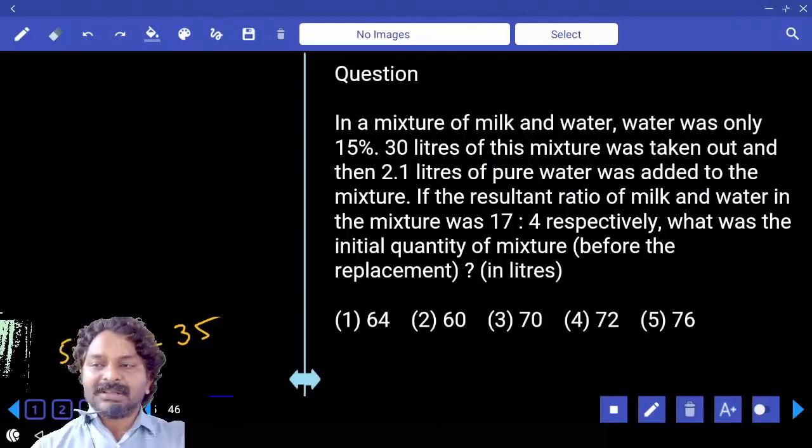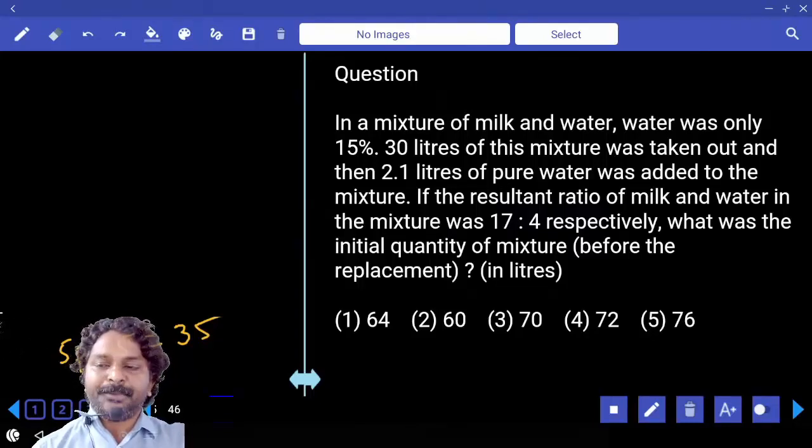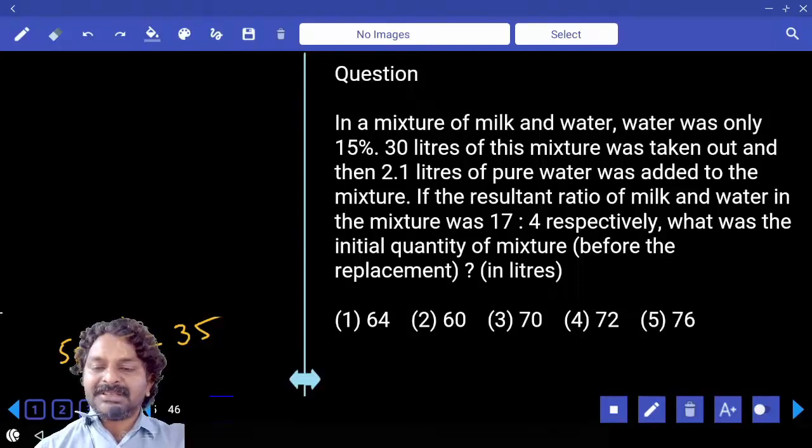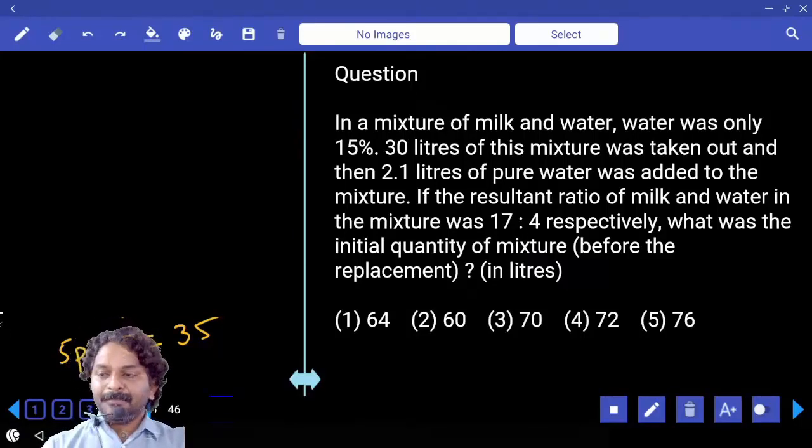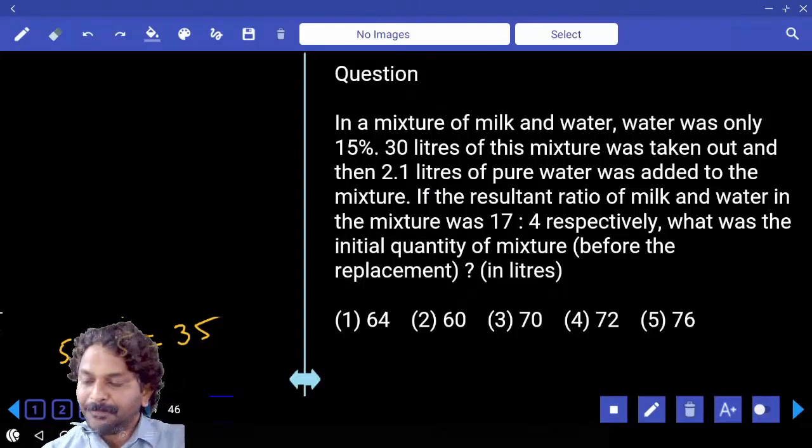In a mixture of milk and water, water was only 15 percent. 30 liters of this mixture was taken out and then 2.1 liters of pure water was added to the mixture. If the resultant ratio of milk and water in the mixture was 17 is to 4 respectively, what was the initial quantity of mixture before replacement?